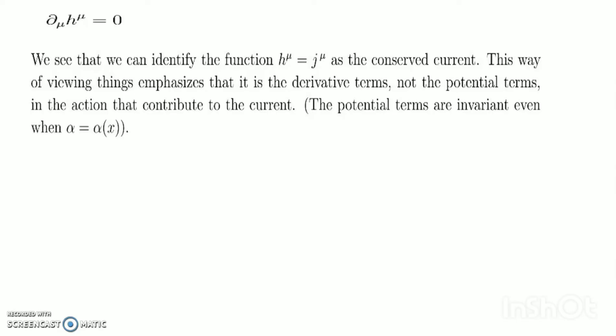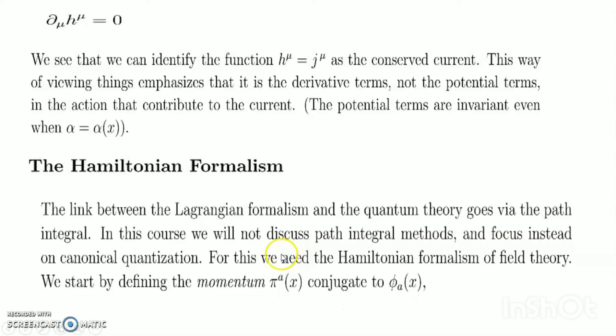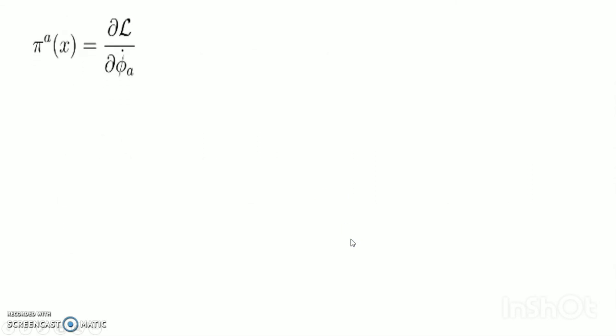The Hamiltonian Formalism. The link between the Lagrangian formalism and the quantum theory goes via the path integral. In this course we will not discuss path integral methods and will focus instead on canonical quantization. For this we need the Hamiltonian formalism of field theory. We start by defining the momentum pi^a(x) conjugate to phi_a(x).